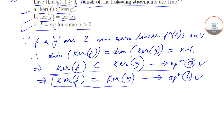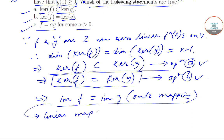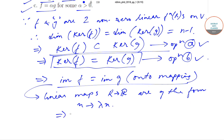Since kernel of F equals kernel of G, the image of F will equal the image of G, since this is an onto mapping. We've also been told these are linear functionals on V. Linear maps from R to R are of the form x maps to λx.